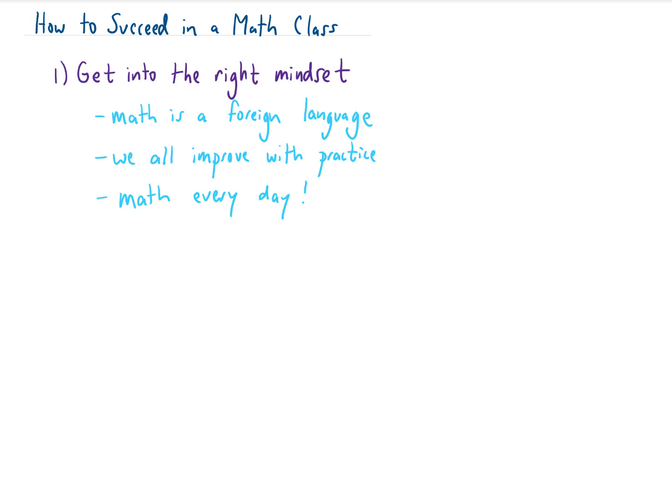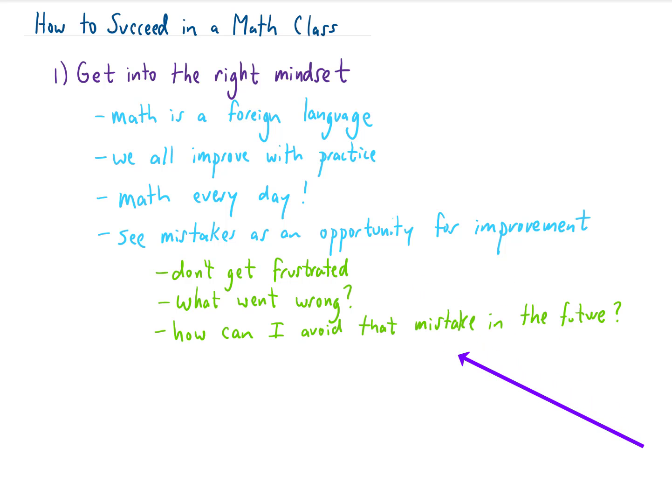Another part of the correct mindset for learning math is how we look at mistakes. If you're doing it right, you should be making thousands of mistakes this semester. We need to look at each of those mistakes as an opportunity for improvement. Instead of getting frustrated, ask the question: what went wrong? Why did what I tried to do not work? What should I be doing correctly? And how can I not make that mistake next time? That is how we improve and grow with everything that we do.